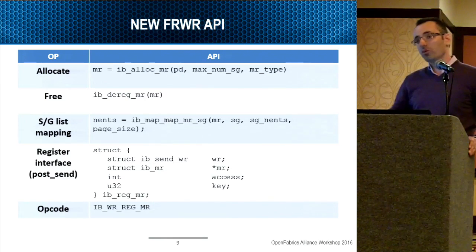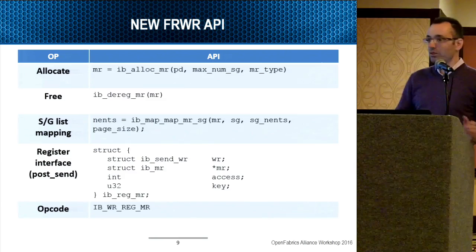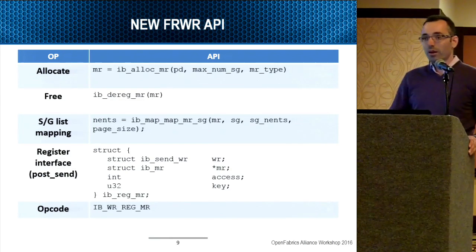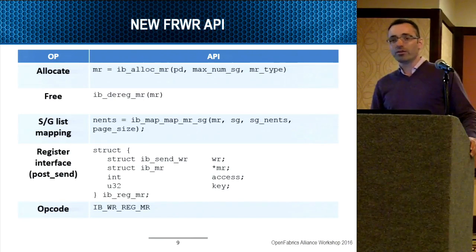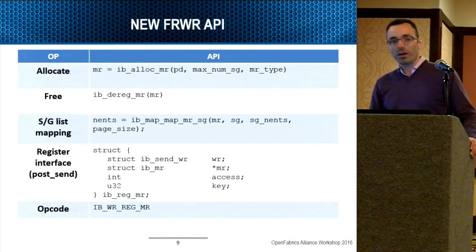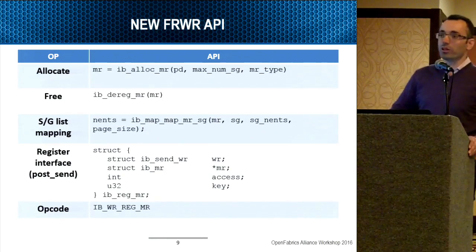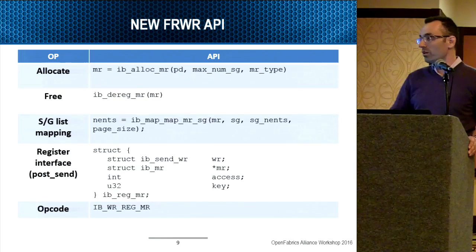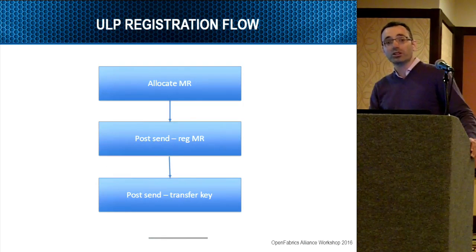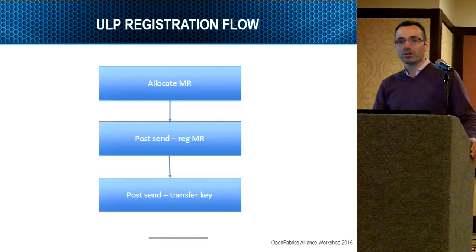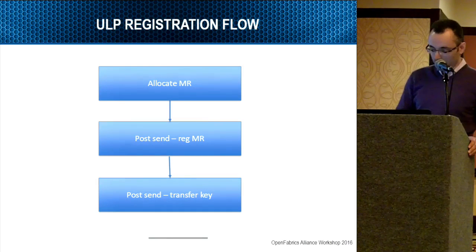Additionally, if the device below the ULP supports arbitrary scatter-gather lists, all that is expected from these devices is to export their device capability to the upper level, and IB core will be able to provide a relevant scatter-gather list which can be in different sizes. From the ULP and programmer's point of view, we no longer need to worry about how to register or work with scatter-gather — just supply the scatter-gather from the block layer interface without any conversion and it will work flawlessly. The registration flow is: allocate, post work request, and post request with transfer key. Very simple.